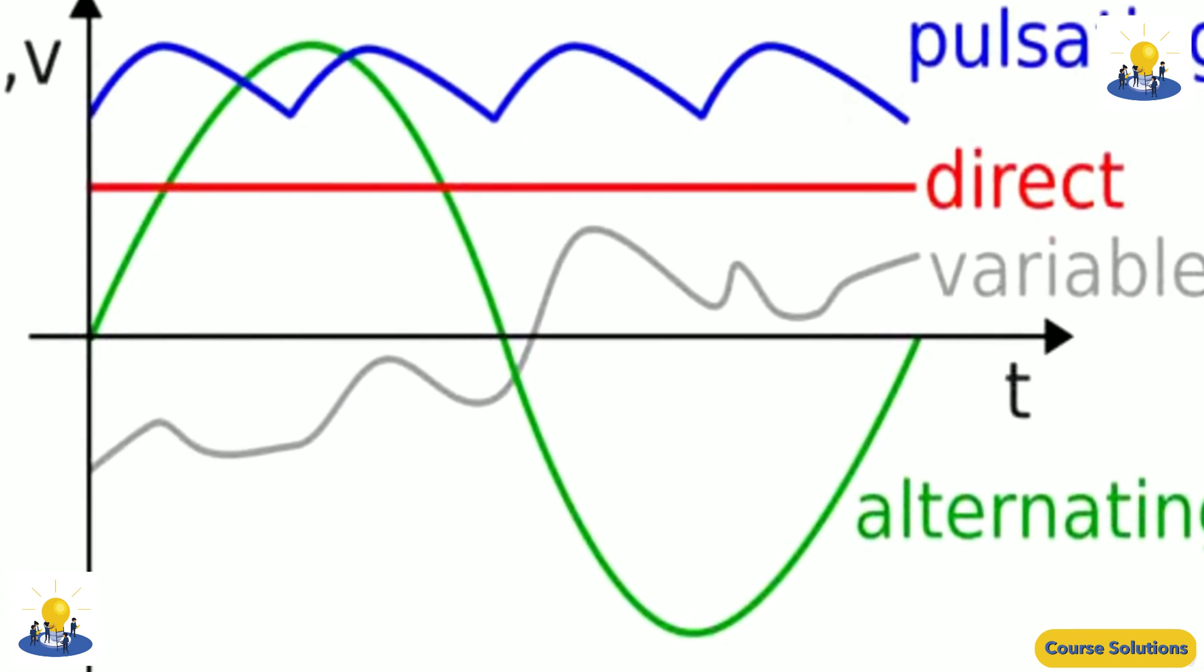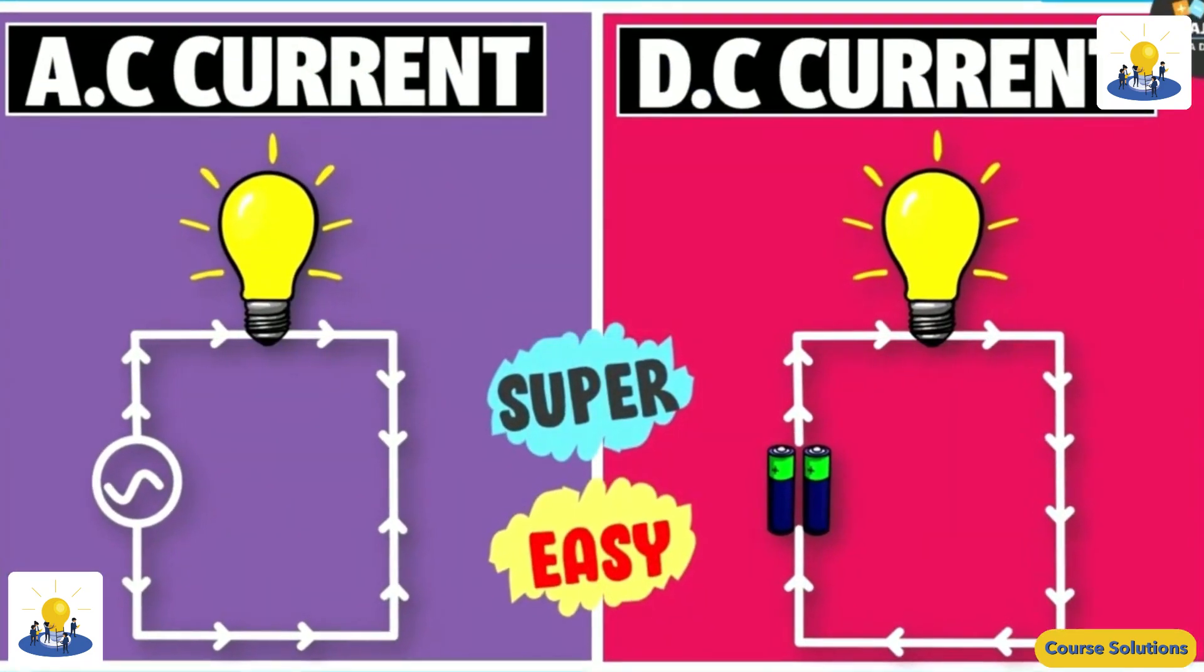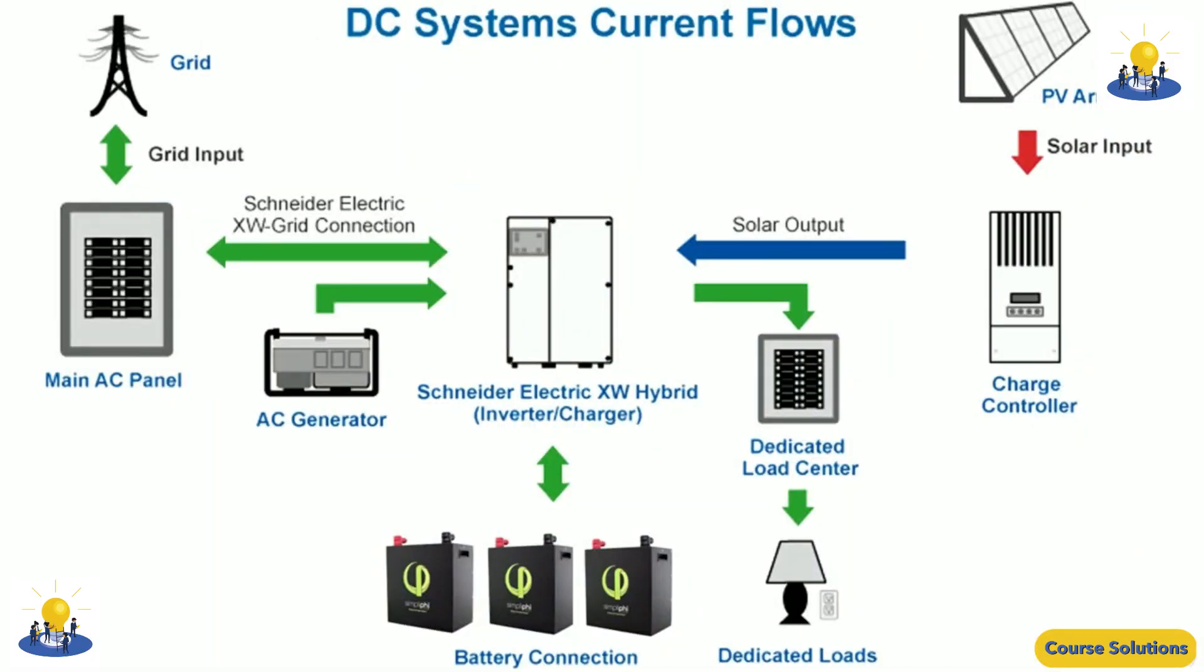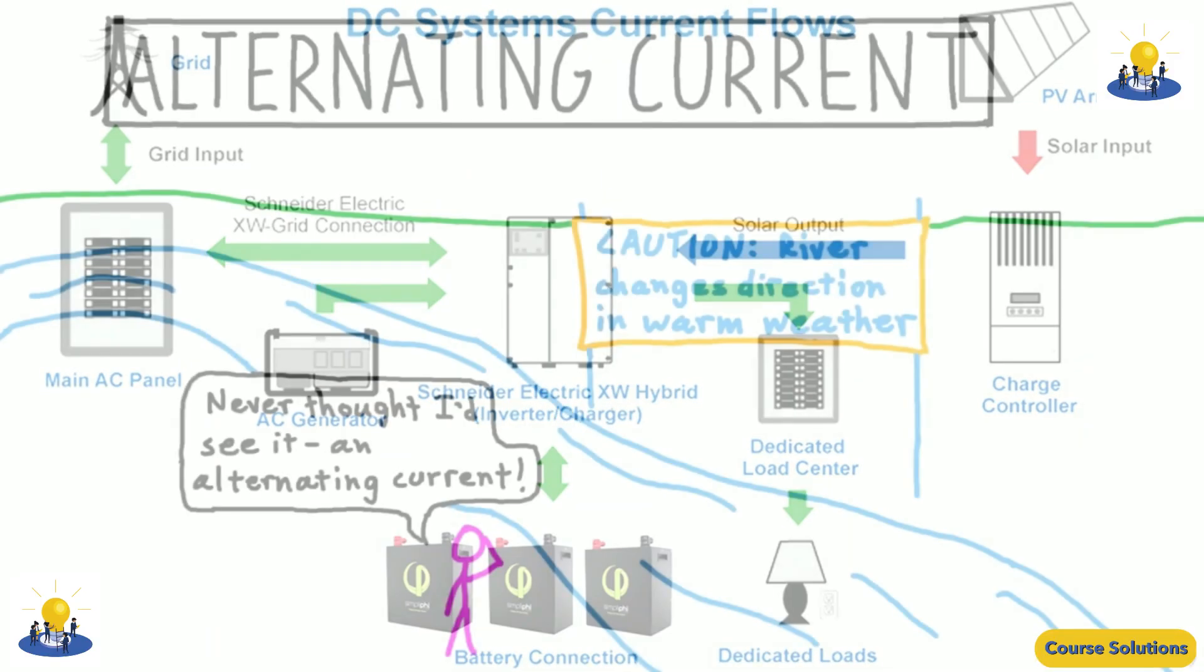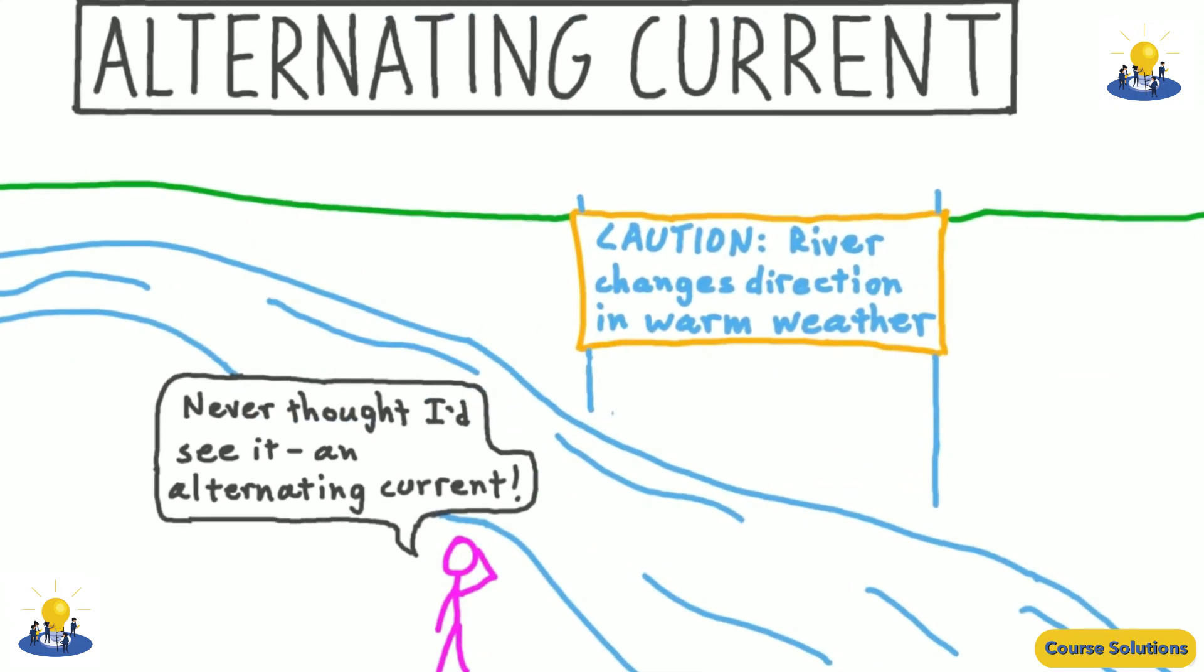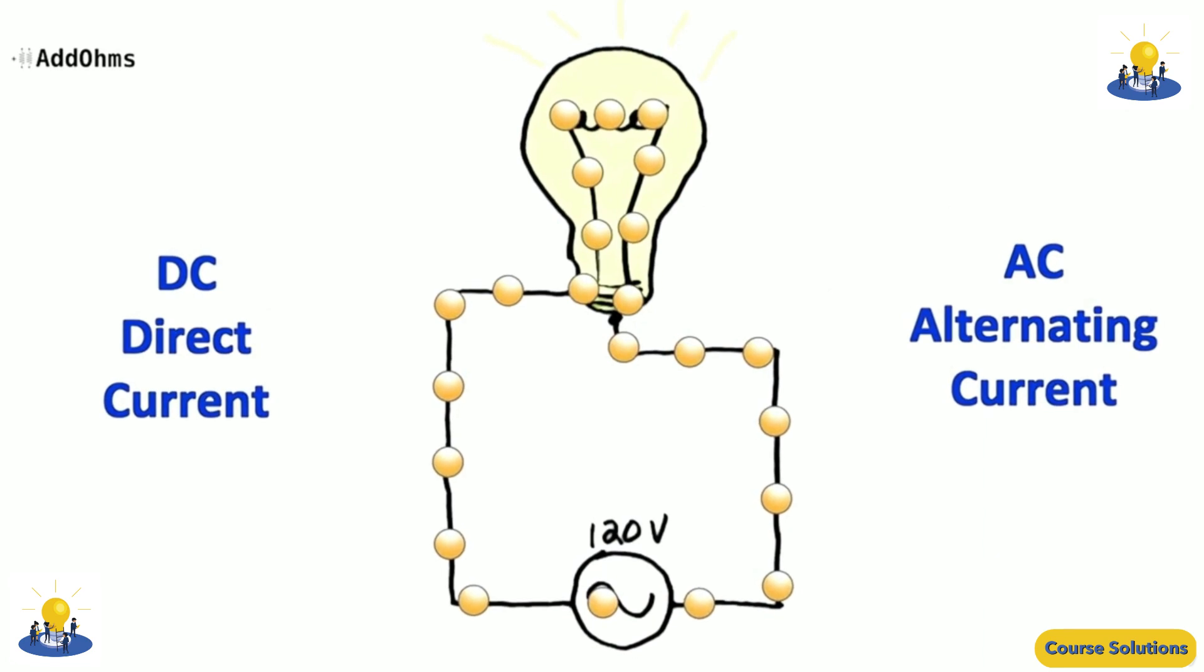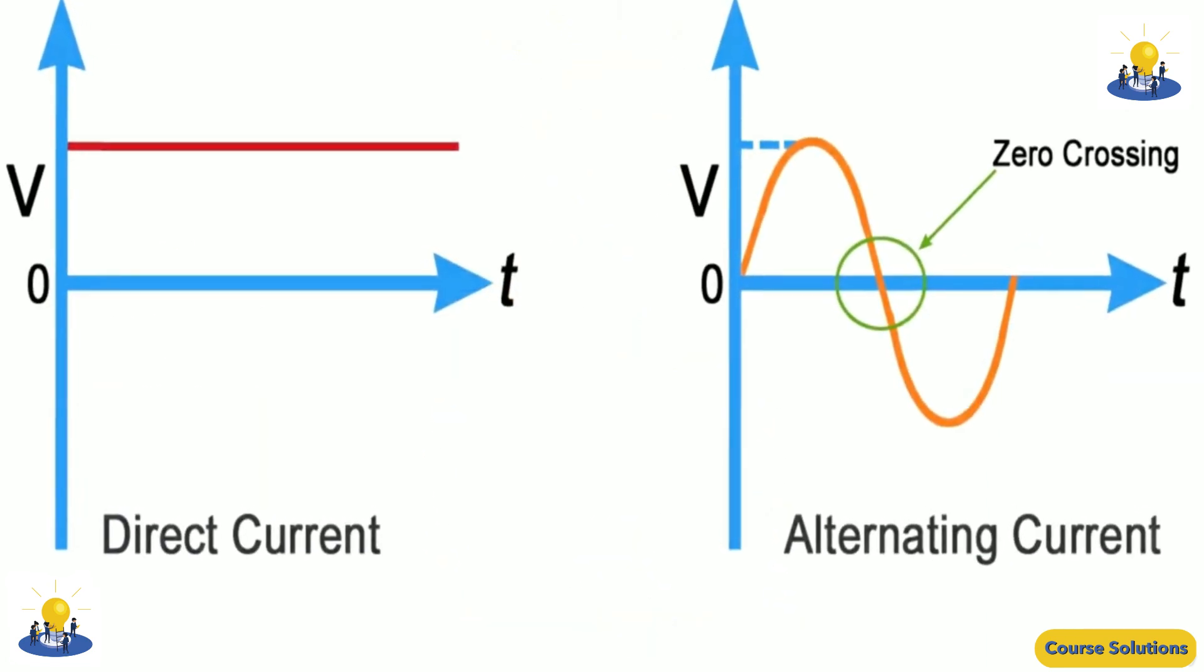Low frequencies, such as 50 and 60 cycles per second (hertz), are used for domestic and commercial power, but alternating currents of frequencies around 100 million cycles per second (100 megahertz) are used in television and those of several thousand megahertz in radar or microwave communication.